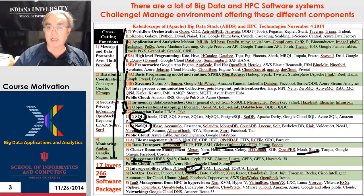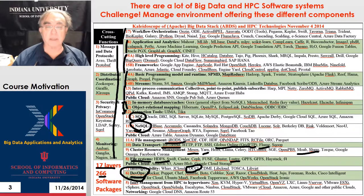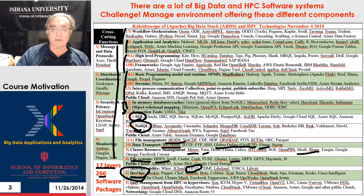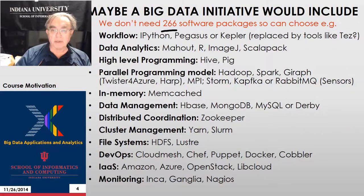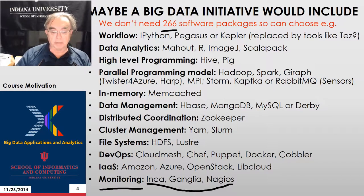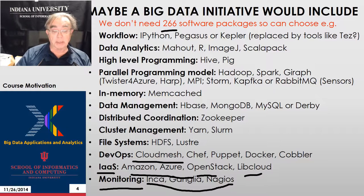This is a big challenge — how do we cope with 266 environments? My approach is DevOps. Without DevOps, we're not going to survive. We need to automate as much of this as possible so that you can take some script, deploy it, and it all happens automatically. You don't actually need all 266, because there's some duplication, and if you focus on a particular area, you don't need everything. For monitoring, we use Inca, Ganglia, and Nagios. For infrastructure as a service, we have Amazon, Azure, OpenStack, and Libcloud. Cloud Mesh is our own DevOps tool, but the more important public tools are Chef, Puppet, Docker, and Cobbler.